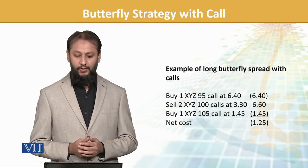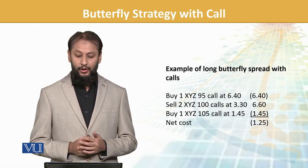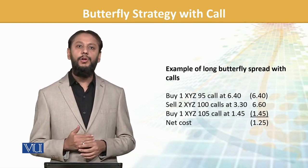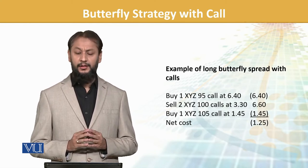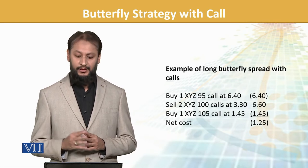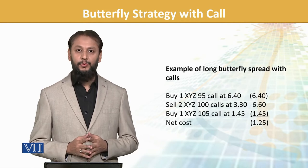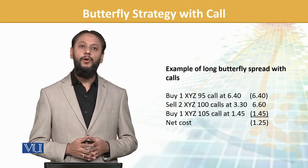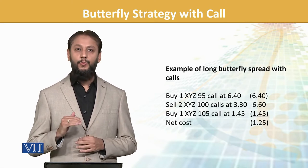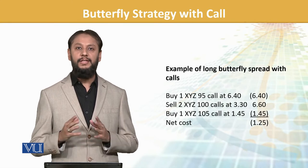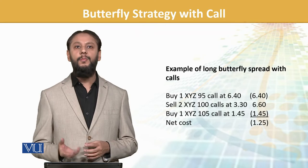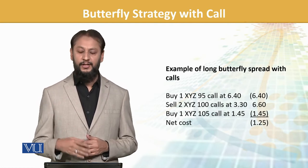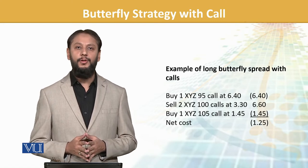Humne ek buy ki X, Y, Z ki call option 95 ke rate pe, aur us ka premium humne pay karna pada 6.4. We know the logic ke call price jitni low strike price ki hogi, woh utni mehngi hogi. Doosra, humne 100 wali do call options sell kari — kyunke woh mid tier ki hain — aur us mein premium tha 3.3, to 2 sell karne pe humne 6.6 ka premium mila. Phir higher strike price ki call option kharidi — 105 ki strike price wali — woh humne 1.45 dollars mein li. So effectively net outflow 1.25 dollar per combination hua.